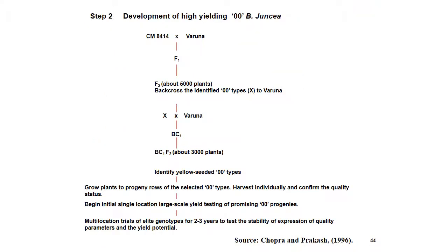The second step was developing high yielding 00 Brassica juncea: CM8414 was crossed to Varuna. In F2, about 5,000 plants were raised and identified 00 type was backcrossed to Varuna. From BC1F2, about 3,000 plants were obtained. Yellow seeded 00 types were identified, progenitors of selected 00 types were grown, harvested individually, and quality confirmed. Initial single location and large-scale yield testing of promising 00 lines was done. Finally, multi-location trials of elite genotypes for 2 to 3 years were conducted to test stability of expression of quality parameters and yield potential.